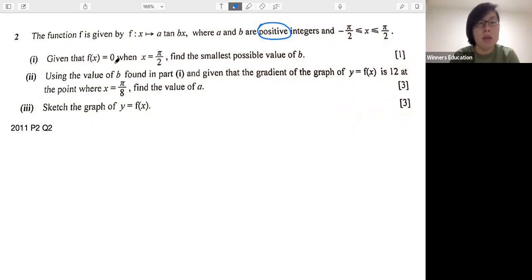Now part one, given that f(x) equals zero when x equals π/2, find the smallest possible value of b. And this is a one mark question.